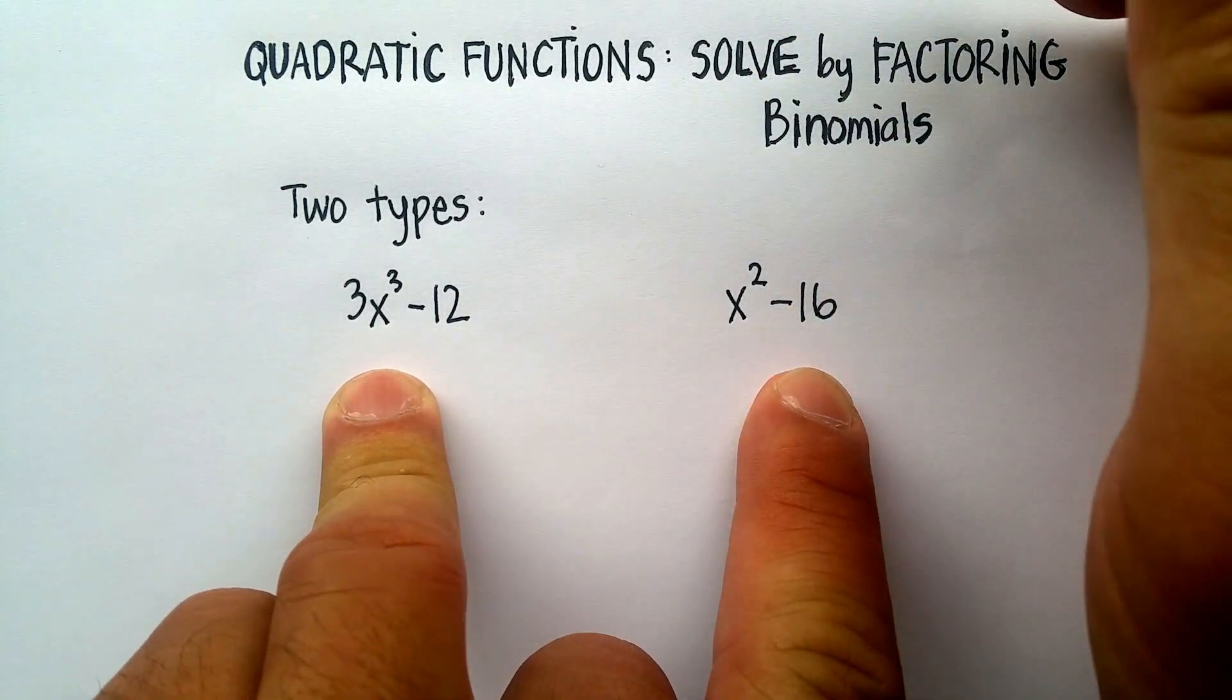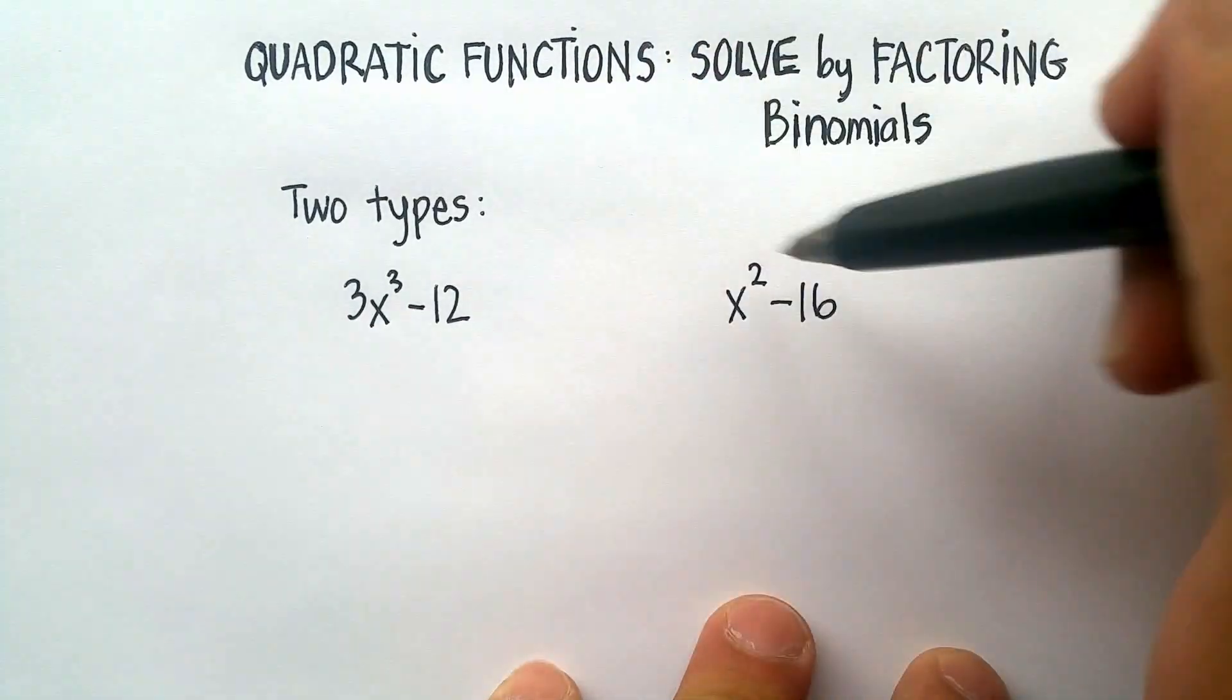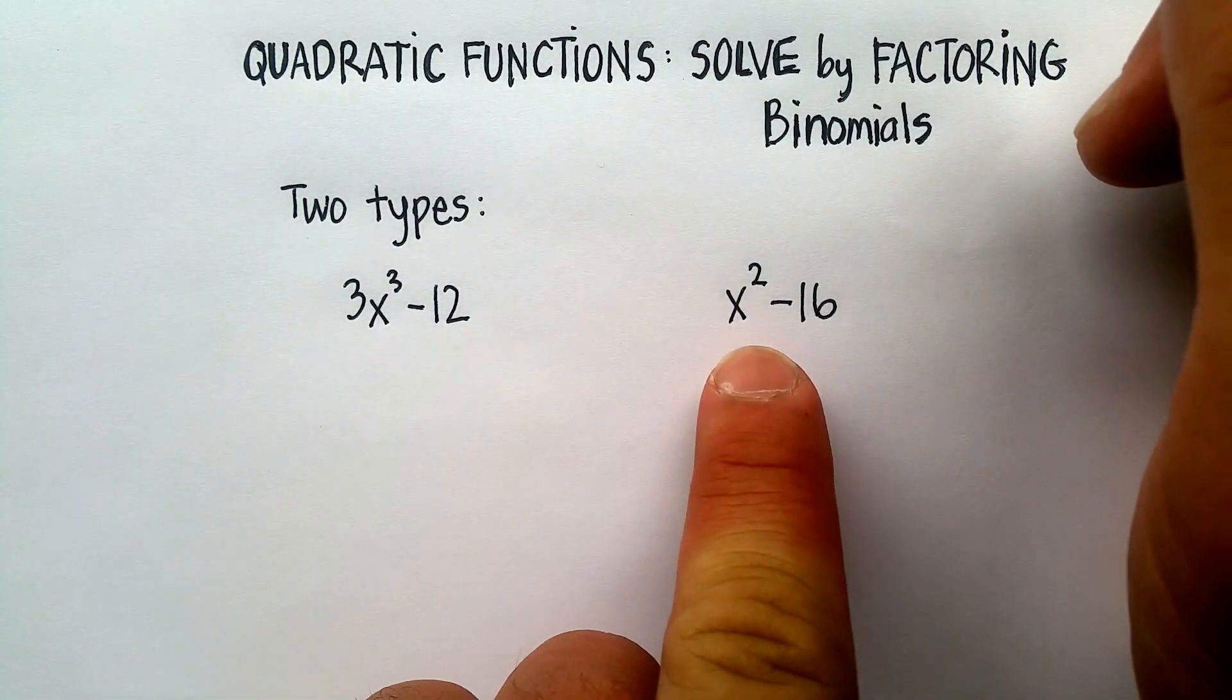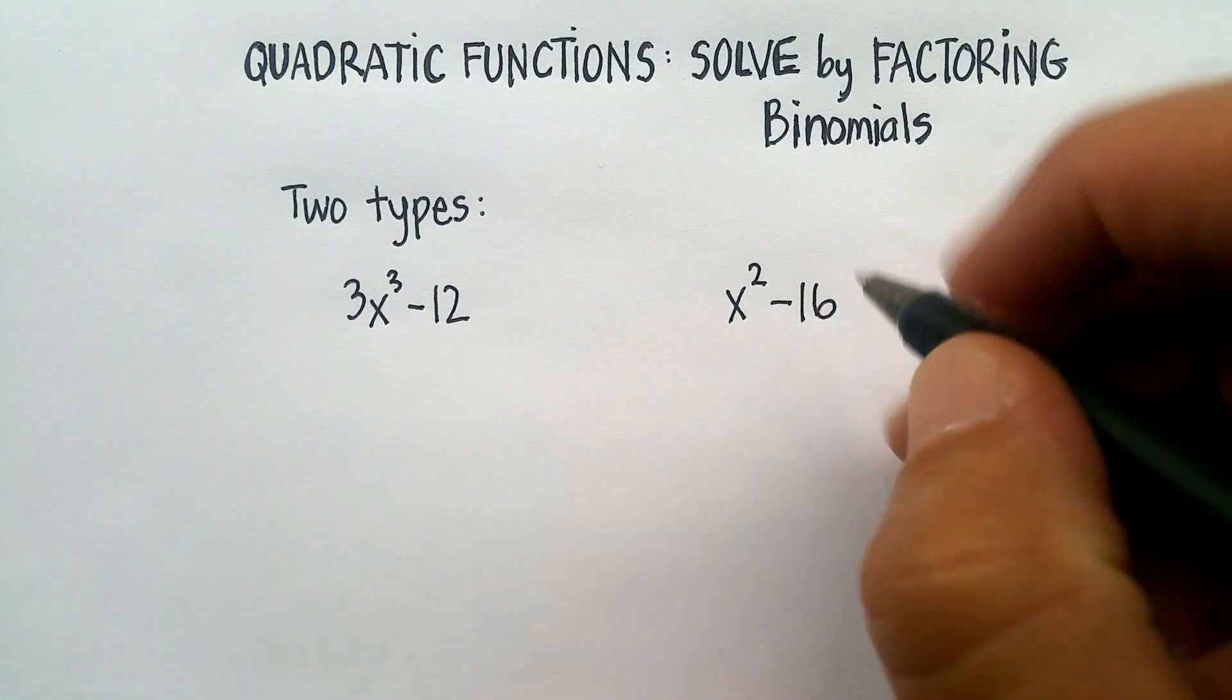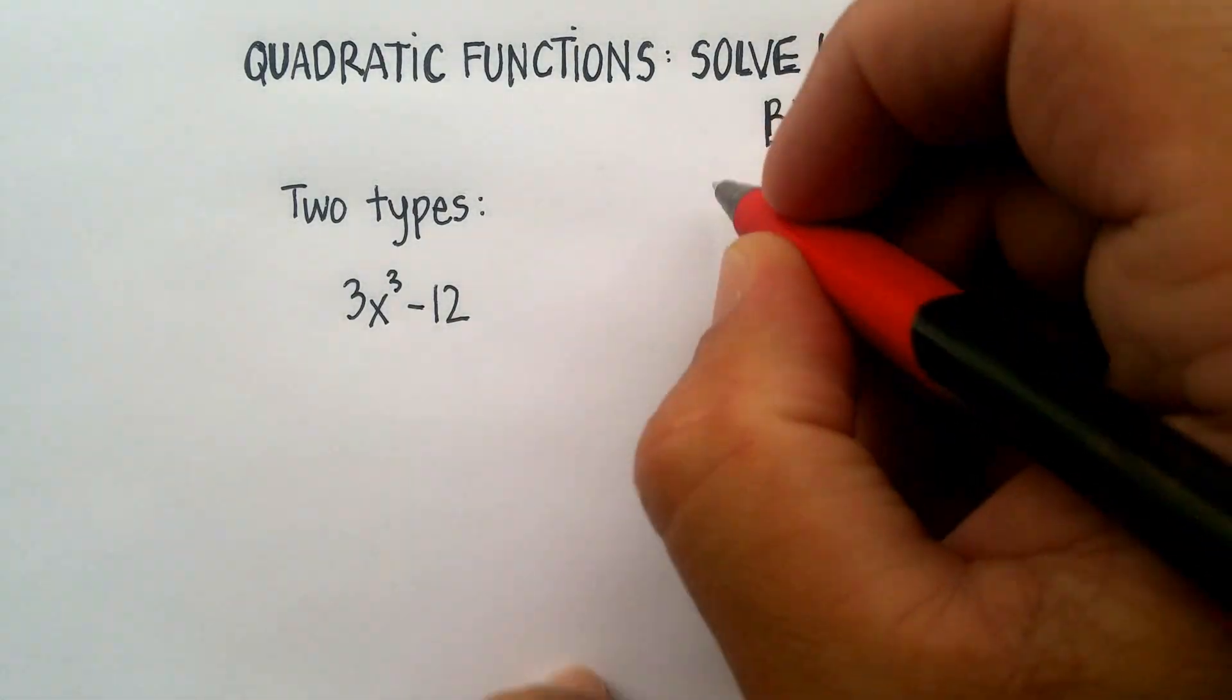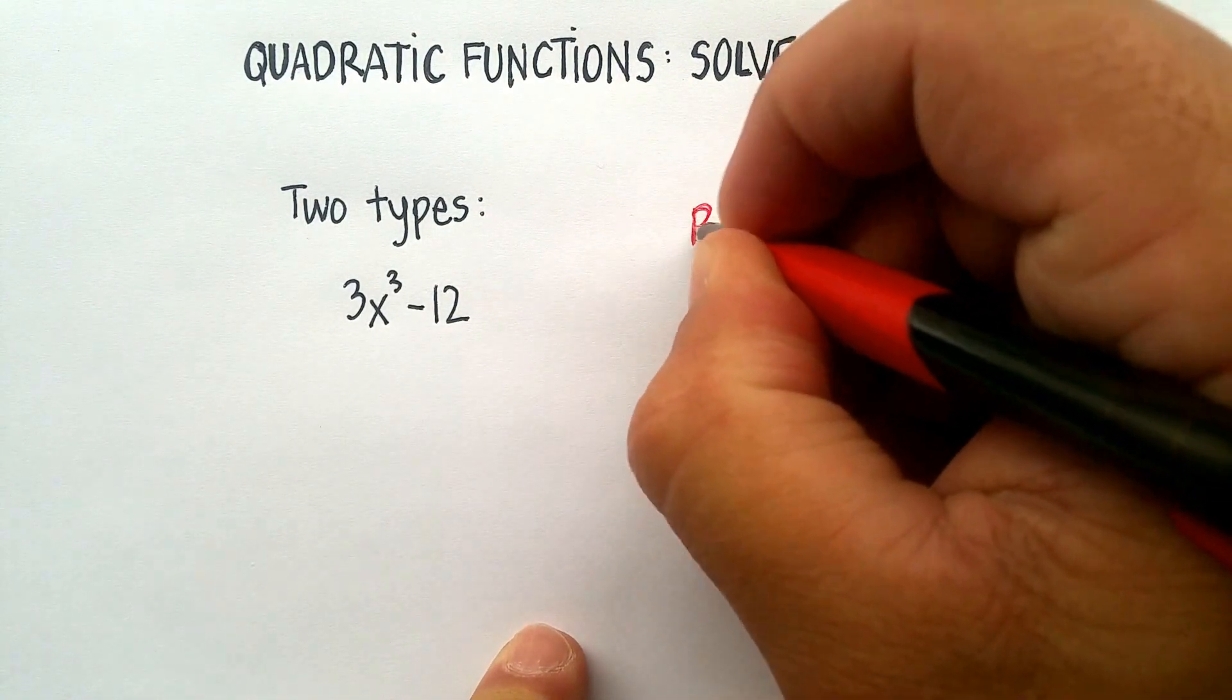But I want to do some binomial ones. I want you to look at specifically two different types. We're gonna start with this one on the right hand side. This is what we call a perfect square binomial.